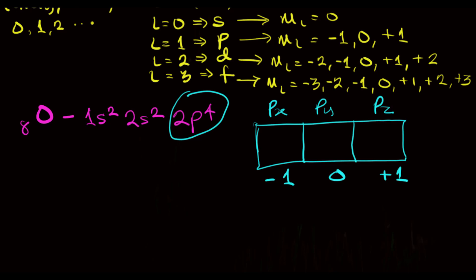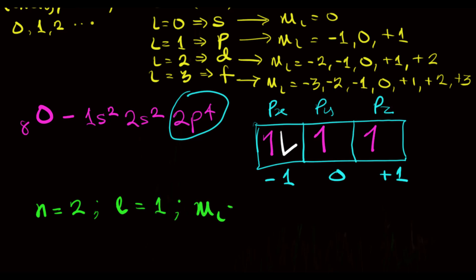So if we fill these electrons according to Hund's rule — 1, 2, 3, and 4 — you will observe that the last electron occupies the px orbital, which has a magnetic quantum number of minus 1. So the 4 quantum numbers of this electron will be: N equals 2 (the second shell), L equals 1 (the p subshell), M sub L equals minus 1 (the px orbital), and M sub S equals minus half, which is the downward spin.